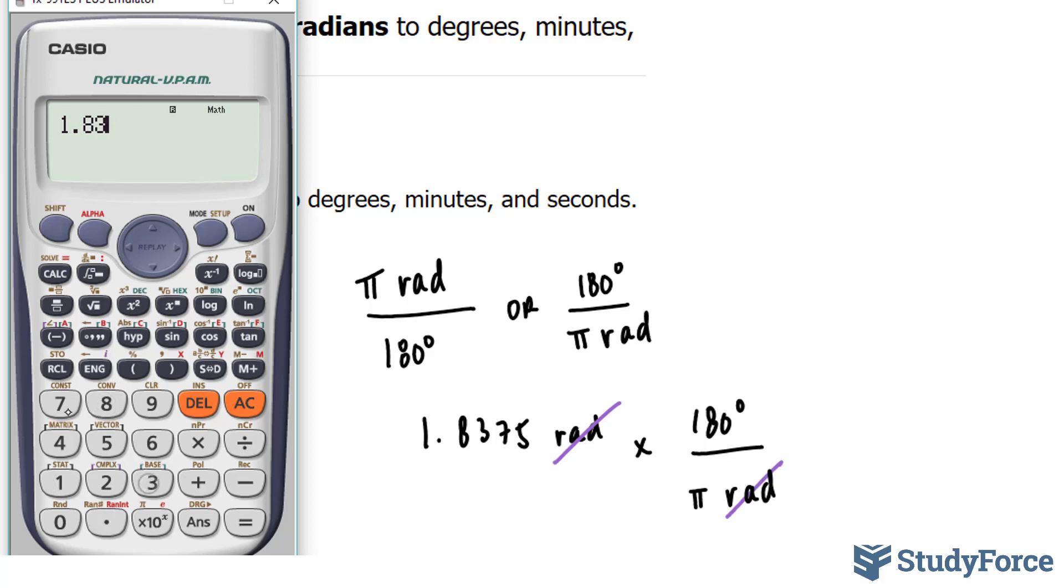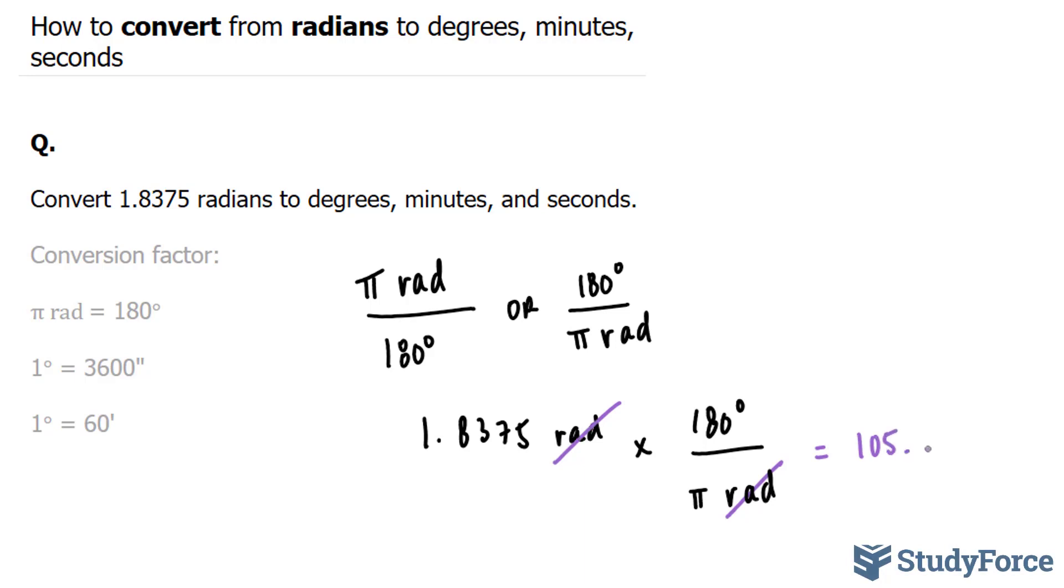1.8375 times 180 divided by pi, which represents approximately 3.14. However, your calculator already has it programmed. And your answer is 105.2809 degrees, so therefore this represents degrees.